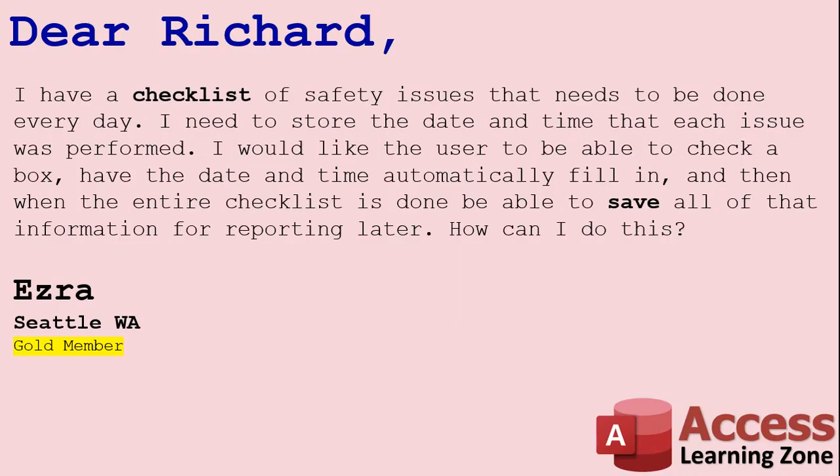Today's question comes from Ezra from Seattle, Washington. Ezra asks: I have a checklist of safety issues that needs to be done every day. I need to store the date and time that each issue was performed. I would like the user to be able to check a box, then have the date and time automatically fill in, and then when the entire checklist is done, be able to save all that information for reporting later on. How can I do this?